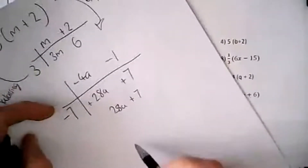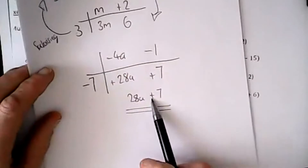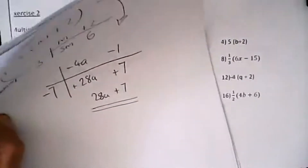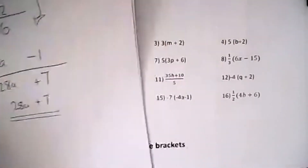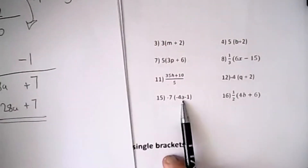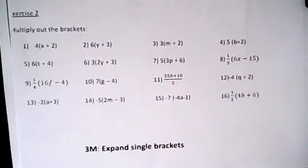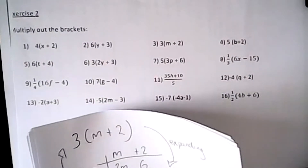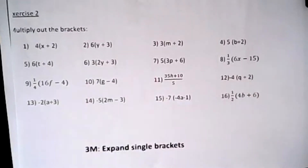So our answer is 28a plus seven. Very often I find that the more complicated question actually has numbers that cancel and break down, and things become a lot easier. I always say: if it looks easy it probably isn't, and if it looks complicated it's probably much easier than it looks.